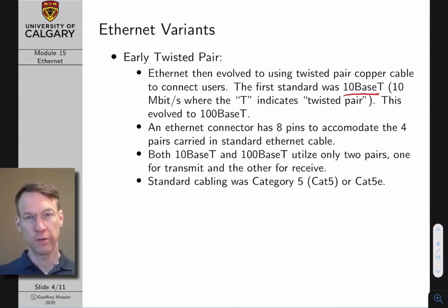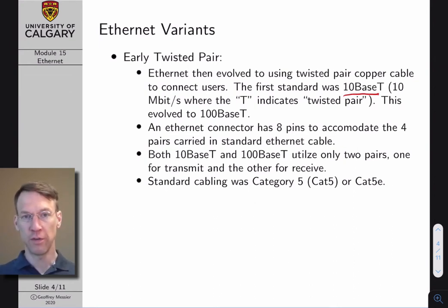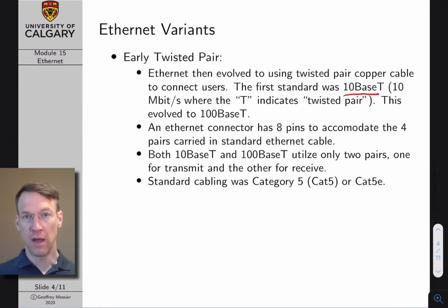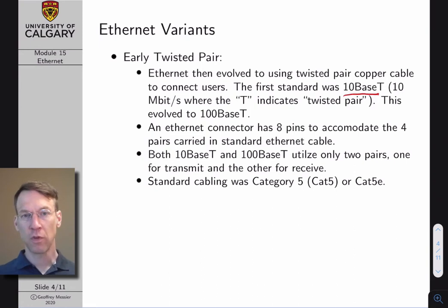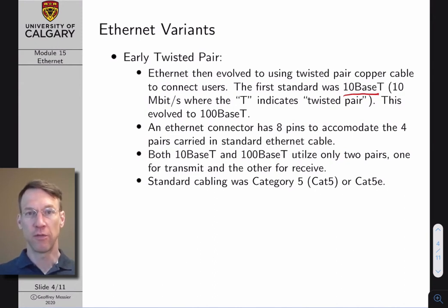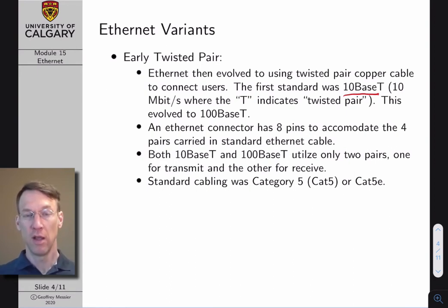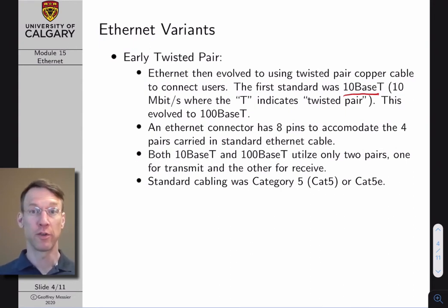The reason more twists improves throughput is because differential signaling is used on these twisted pairs. A positive voltage is sent on one wire and a mirrored negative voltage on the other. When an interfering signal couples into that cable, the interference is additive on both wires, so when you do the differential receiving, that interference is cancelled out. The more twists in your copper wire, the better the interference cancellation — though the more expensive the cable, since more twists use more copper.